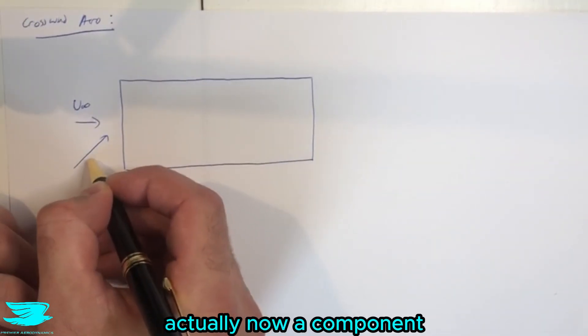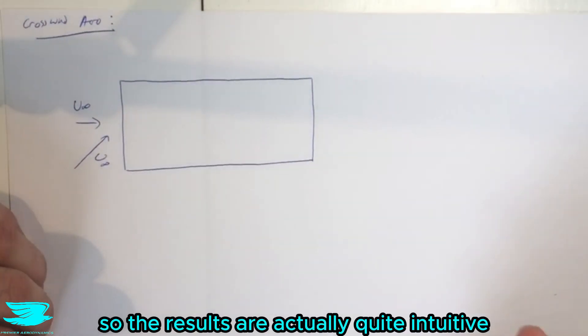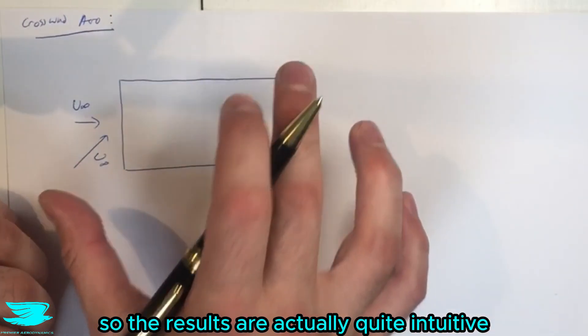So what happens when there's actually now a component in the side direction? The results are actually quite intuitive.